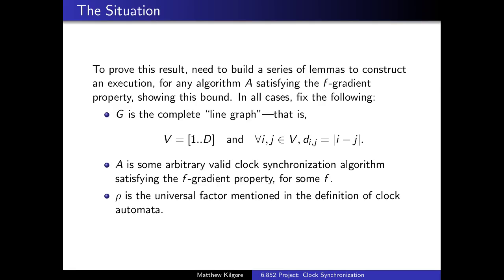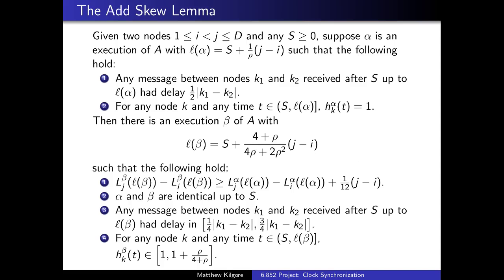To prove this result, we need to build a series of lemmas to construct an execution for any algorithm A satisfying the F gradient property. In all cases, we'll fix the following: G is the complete line graph, that is, V = [1..D] and for all i,j in V, d_ij = |i - j|. A is some arbitrary valid clock synchronization algorithm satisfying the F gradient property for some f. Rho is the universal factor mentioned in the definition of clock automata.